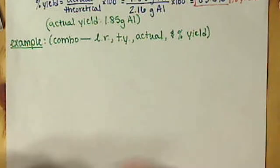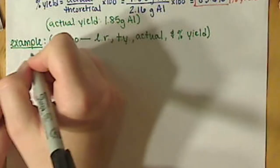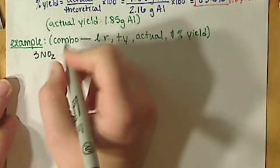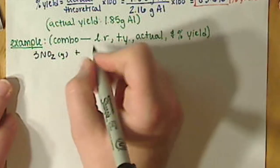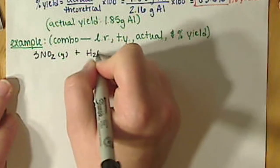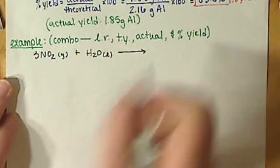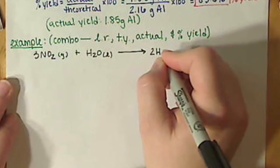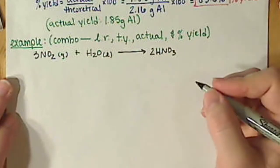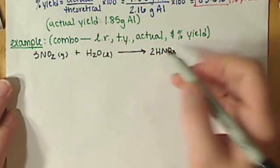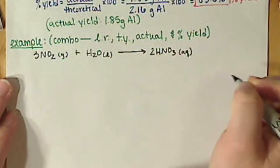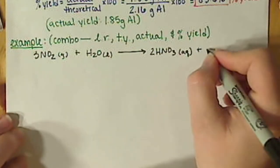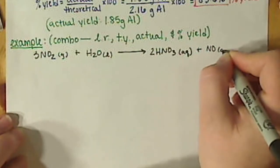So let's use this reaction here. We're going to take three moles of nitrogen dioxide, react that with some water, and we're going to form HNO₃, which is called nitric acid. Not a name you have to know, just letting you know. And we're going to form some nitrogen monoxide too.